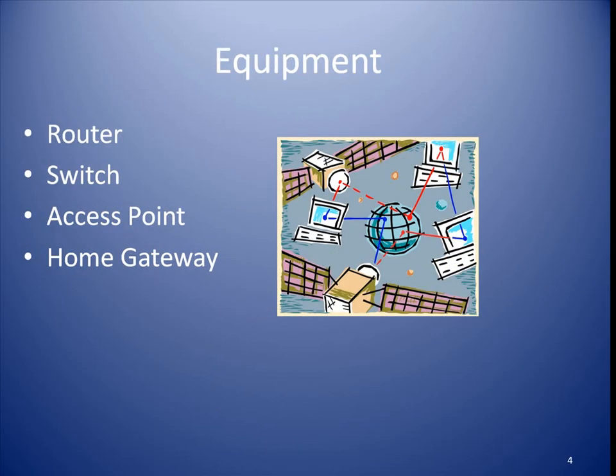Let's take a look at the equipment first. A list of the gear standard to most networks would include routers, switches, and access points. These vary in size and vendor, but the basic functions are largely consistent. The last device on our list is a home gateway. Though small and inexpensive, it actually has the capabilities of the other devices on the list, but is not robust enough for commercial networks. But they are terrific in what we call small office, home office, or SOHO settings.